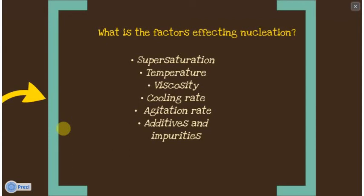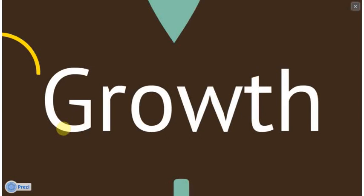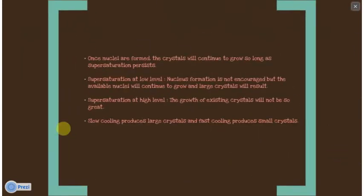The factors that affect nucleation are supersaturation, temperature, viscosity, cooling rate, agitation rate, additives, and impurities. Next is crystal growth. Once nuclei form, the new crystals will continue to grow so long as supersaturation proceeds. At low supersaturation levels, nucleus formation is not encouraged, but available nuclei will continue to grow and large crystals will result. At high supersaturation levels, the growth of existing crystals will not be as great. Slow cooling produces large crystals and fast cooling produces small crystals.